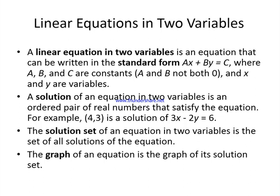A solution of an equation in two variables is an ordered pair of real numbers that satisfies the equation. For example, the solution of the equation 3x minus 2y equals 6 is the ordered pair 4 and 3. As we have seen in quadratic and linear equations, whatever values we get as solutions, if we put them back into the equation, they satisfy it.